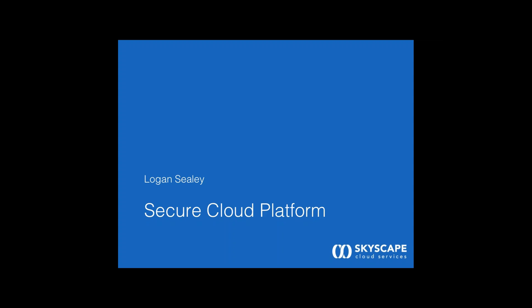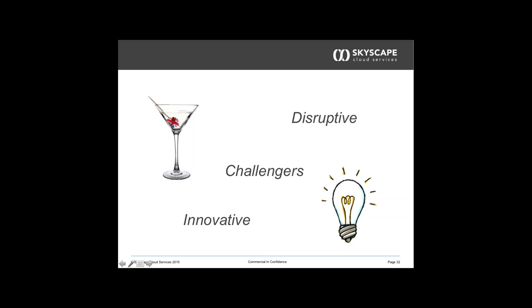The first consideration for Surrey was security and information assurance. Because the project was working with data about vulnerable adults, components of which are considered quite sensitive, Surrey's security team needed to be satisfied that a cloud solution would not introduce risk to the confidentiality, availability or integrity of their data. We were quickly able to satisfy Surrey's team by sharing our evidence pack — a series of documents including our accreditations such as CSG, PSN, N3, Cyber Essentials — and going through our platform architecture and demonstrating how our people and processes adhere to ISO 27001 standards.